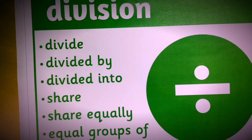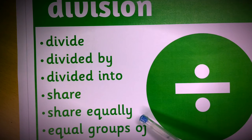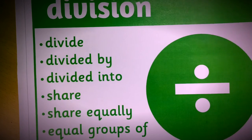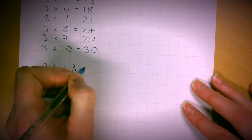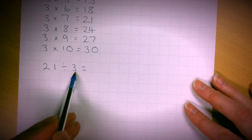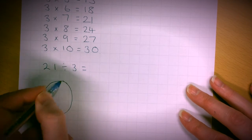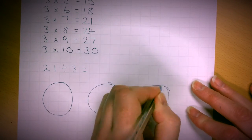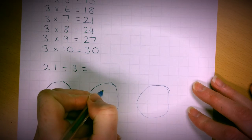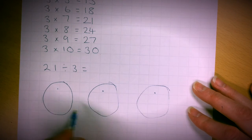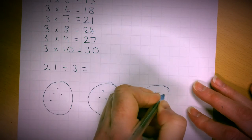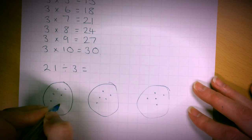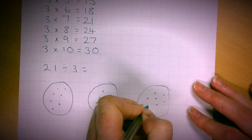Here is some of the vocabulary involved — 'share equally' is another way to approach division by physically drawing it out. Using 21 ÷ 3 again: I've got 21 objects to divide into three separate groups. The children draw three circles for their groups, then place one dot at a time into each group until they reach 21 — that's 3, 4, 5, 6, 7, 8, 9, 10, 11, 12, 13, 14, 15, 16, 17, 18, 19, 20, 21 dots shared equally among the three groups.